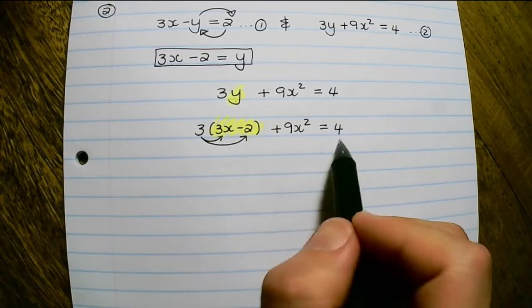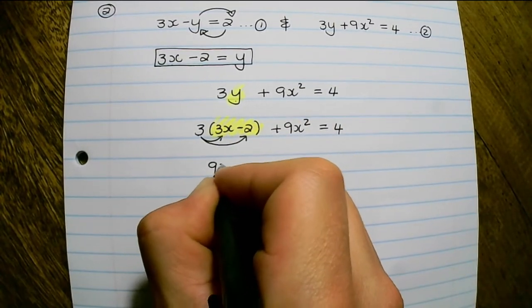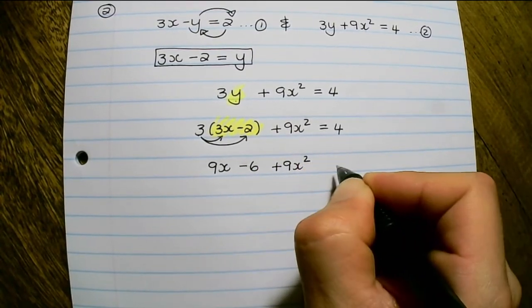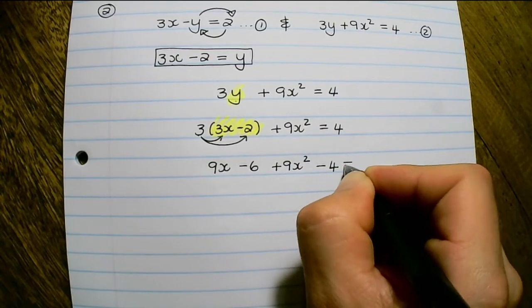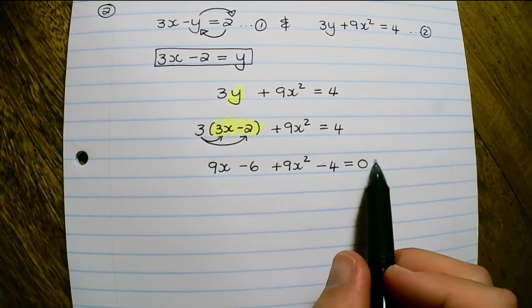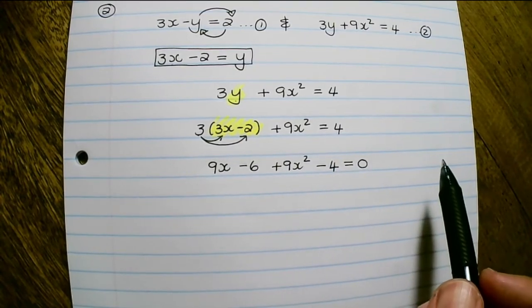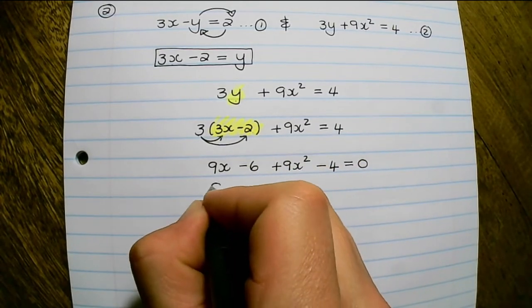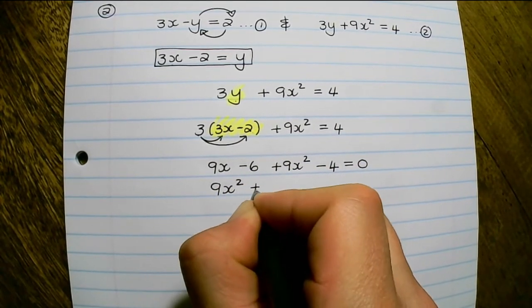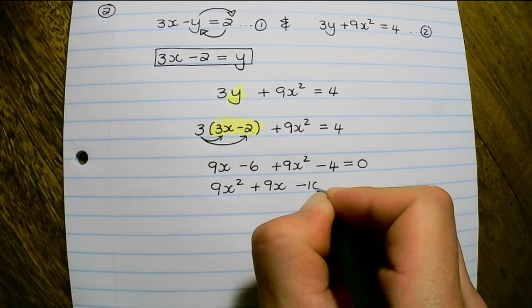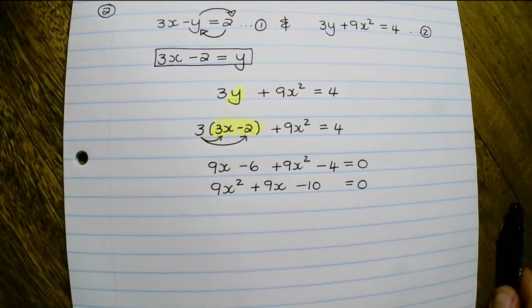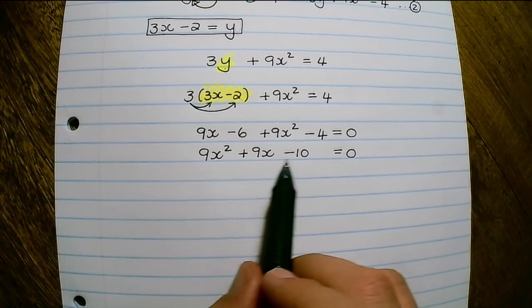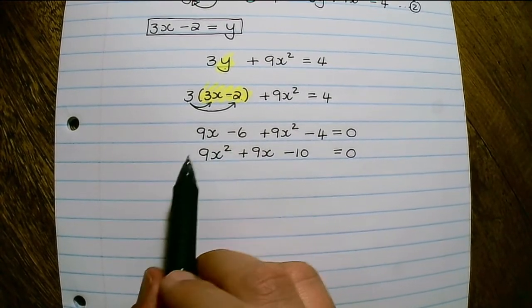So now let's multiply out. That becomes 9x minus 6 plus 9x squared. I would move the 4 to the left hand side of the equation to rewrite it in standard form. If I rewrite this in standard form it is 9x squared plus 9x minus 10. If you are comfortable with factorizing you can factorize; alternatively you can use the quadratic formula. But I'm going to factorize.